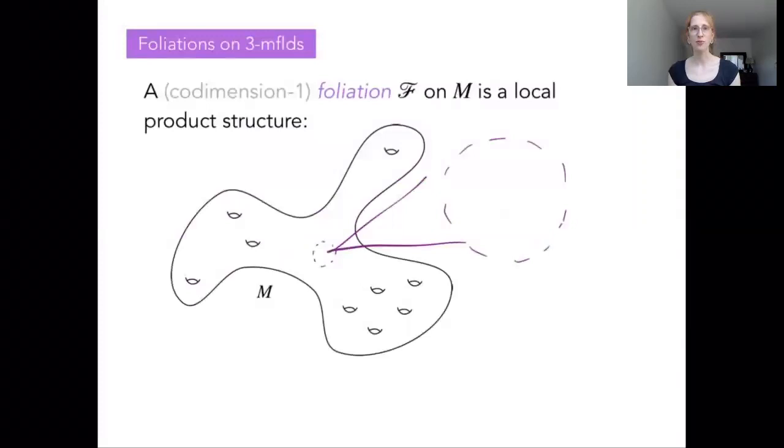So first off, we're sort of motivated by studying foliations on 3-manifolds. What is a foliation? This is essentially a choice of a local product structure on a 3-manifold, and we're going to be focusing on codimension-1 foliations, which means that we're going to be putting an R² cross R¹ product structure on neighborhoods of our manifold.